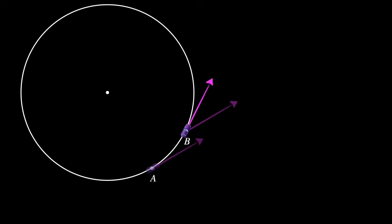At point A, the car's velocity was pointing one way. Now at point B, it has turned and it's pointing in a different direction. Therefore, the green arrow represents how much the velocity has turned or how much it has changed — the change in velocity. We'll call it delta v. Now we're ready to tinker with the speed of the car and the radius of the circle and see how acceleration depends on them.